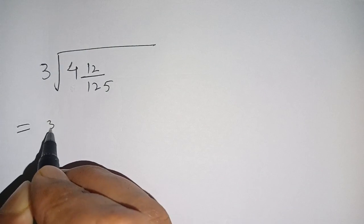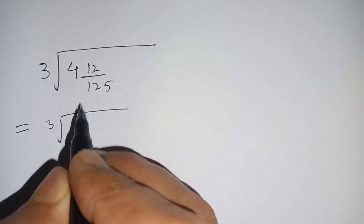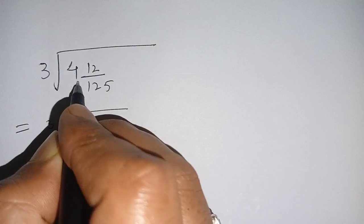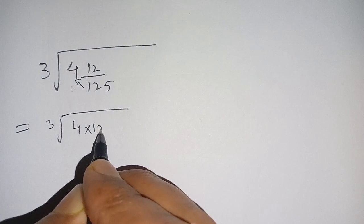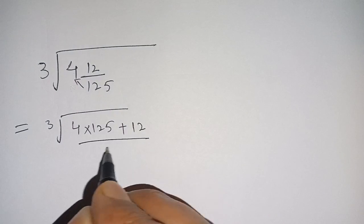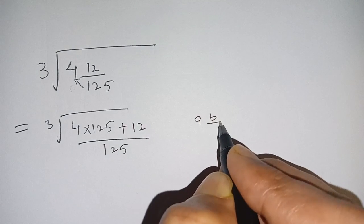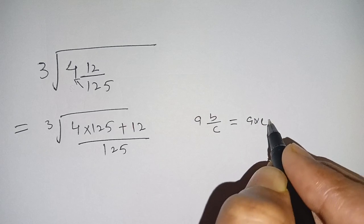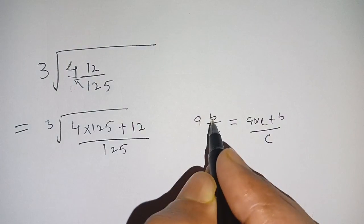We can write this as cube root of 4 and 12 divided by 125. This can be written as 4 times 125 plus 12, divided by 125, because a times b divided by c can be written as a times c plus b, divided by c. Here a is 4, b is 12, and c is 125.